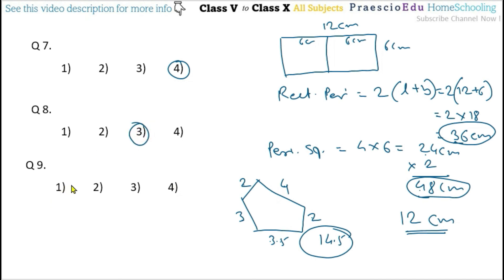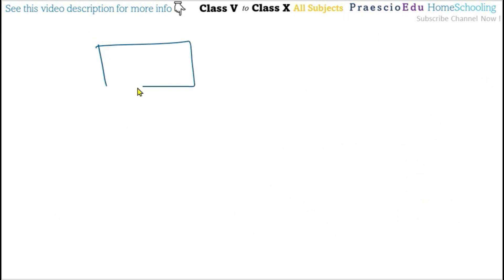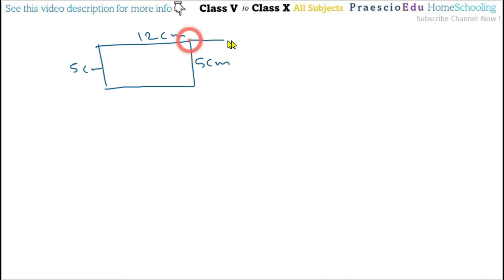Question number 9: a rectangle having length 12 cm and breadth 5 cm is joined to a square of side 5 cm at the breadth. The rectangle is 5 cm wide and 12 cm long, and a square of side 5 cm is attached at the breadth side.